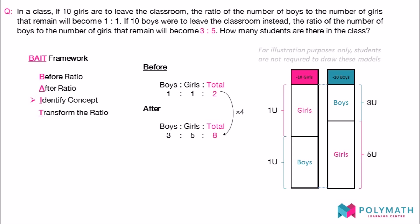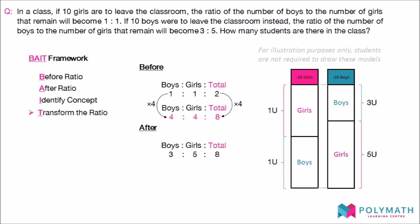We then transform the before ratio by multiplying each component in it by 4 as that will change the total units to 8. For the after ratio, as the total number of units are already 8, we leave it untouched.